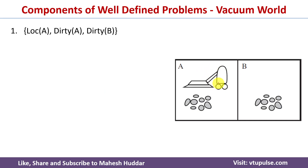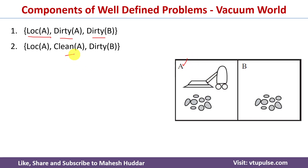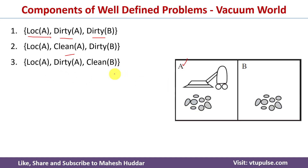The first state: the AI agent is in location A and both location A and B are dirty. The second state: the agent is in location A, location A is clean, and B is dirty. The third state: the agent is in location A, A is dirty, and B is clean. The fourth state: the agent is in location A and both A and B are clean.